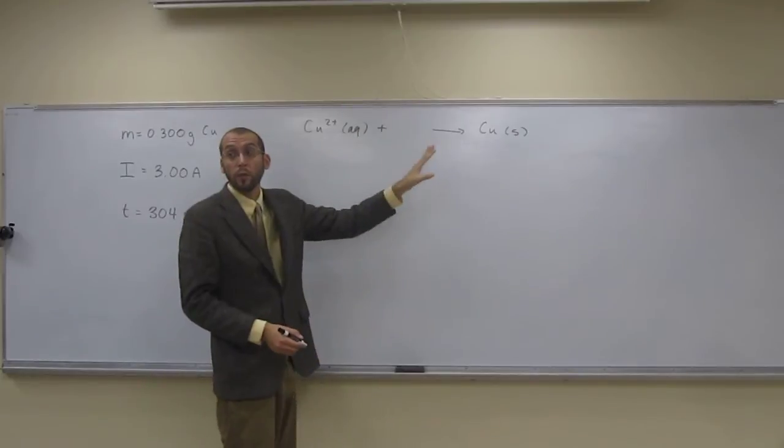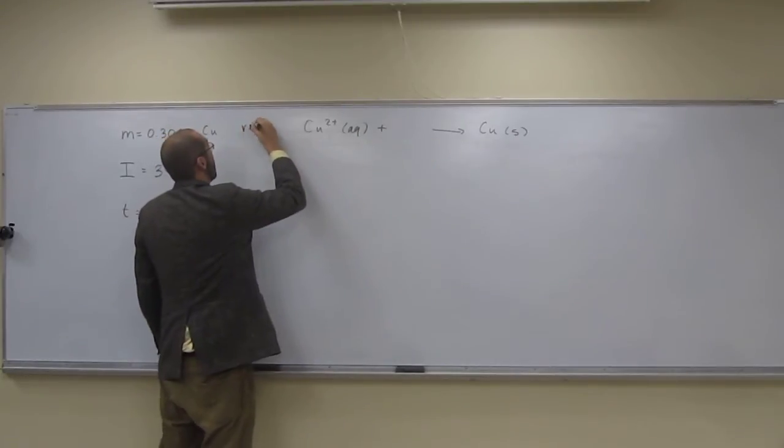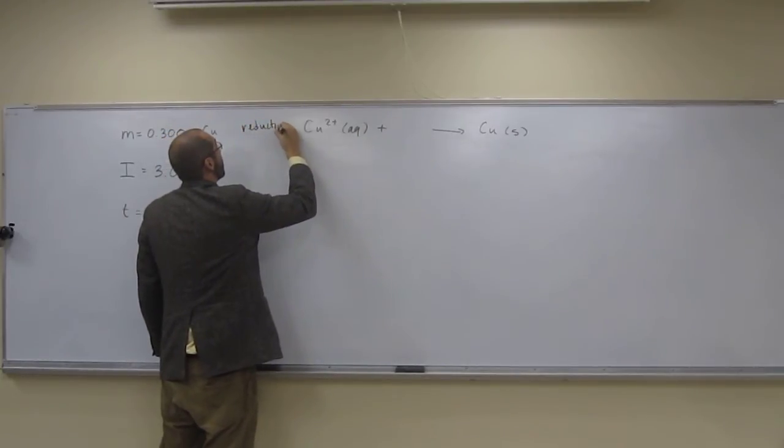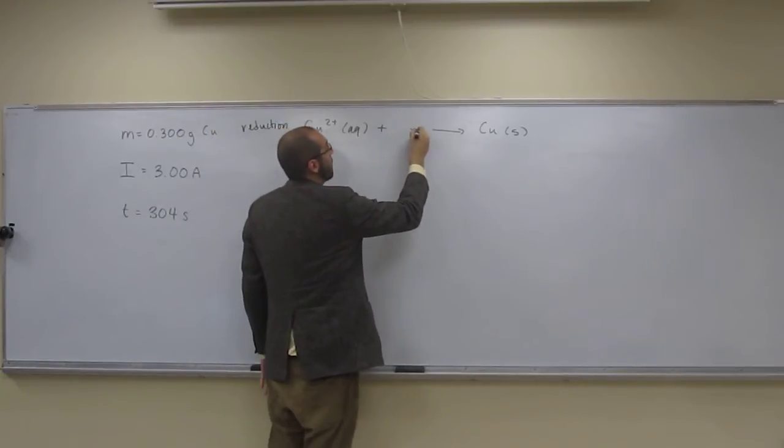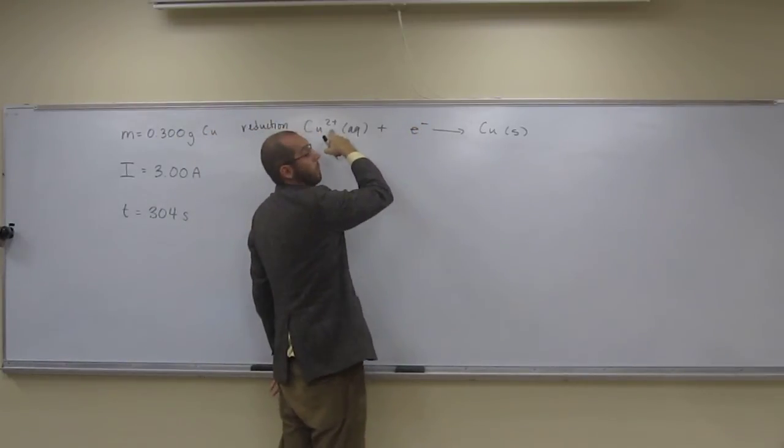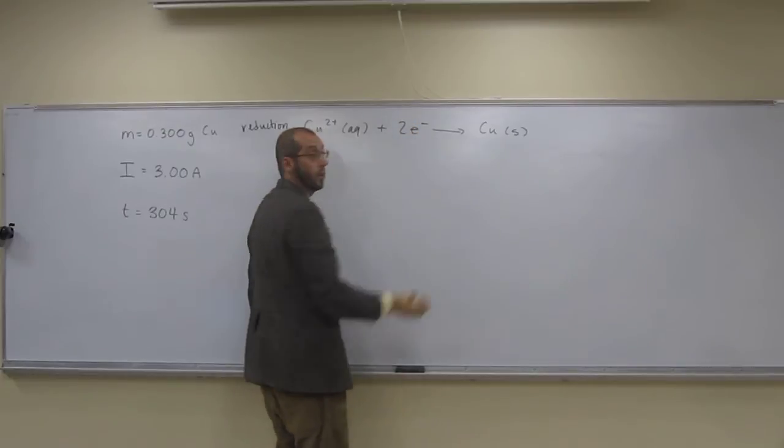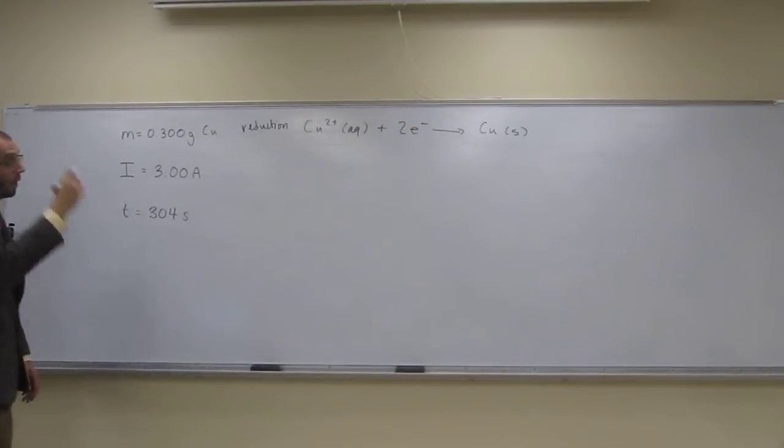So that must mean it's being reduced, right? This is the reduction half reaction. So that must mean we have to add some amount of electrons, and from +2 to 0, it's 2. So that's important.